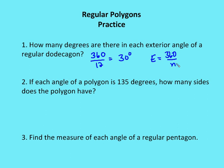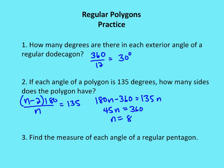Number two: if each interior angle of a polygon is 135 degrees, how many sides does the polygon have? Using the formula (N minus 2) times 180 over N, we set that equal to 135. Solving: 135N equals 180N minus 360, which gives N equals 8. The polygon has 8 sides.